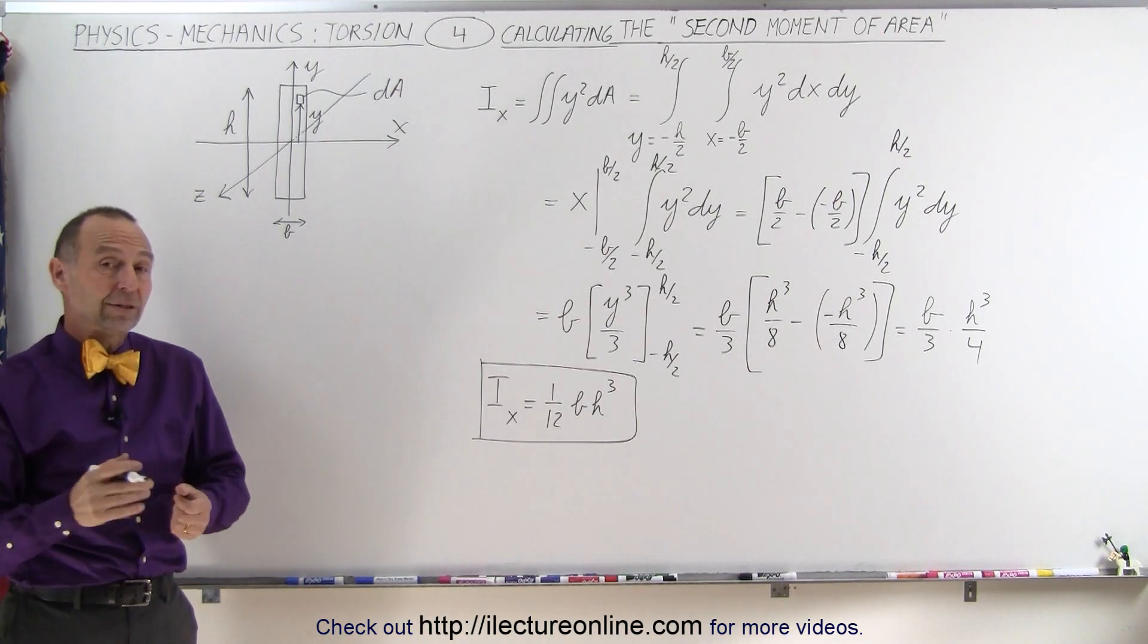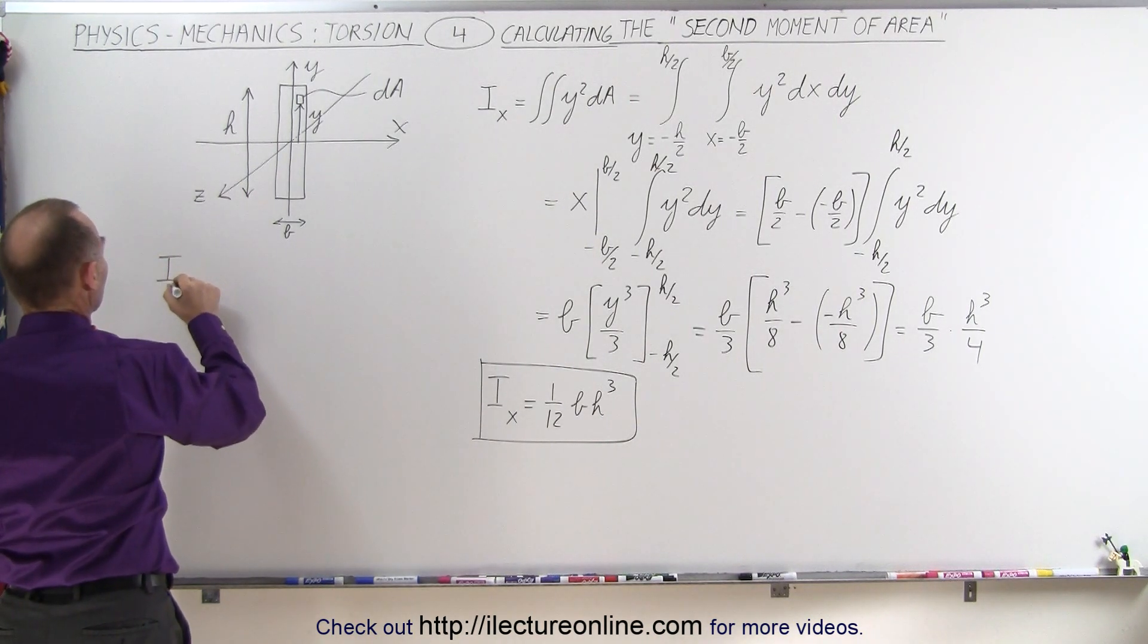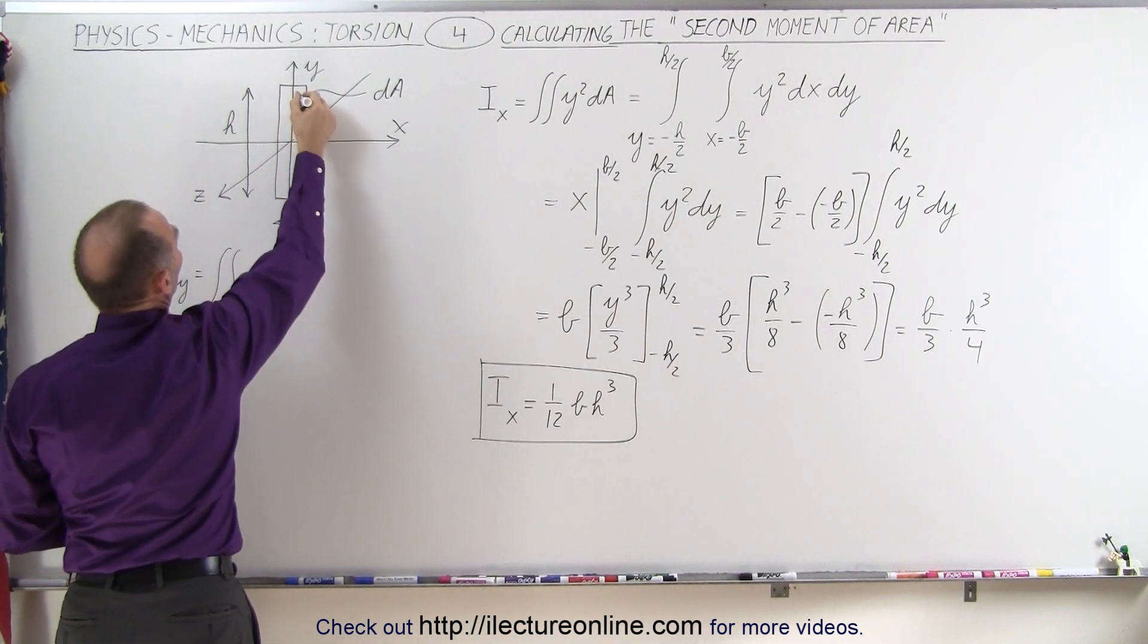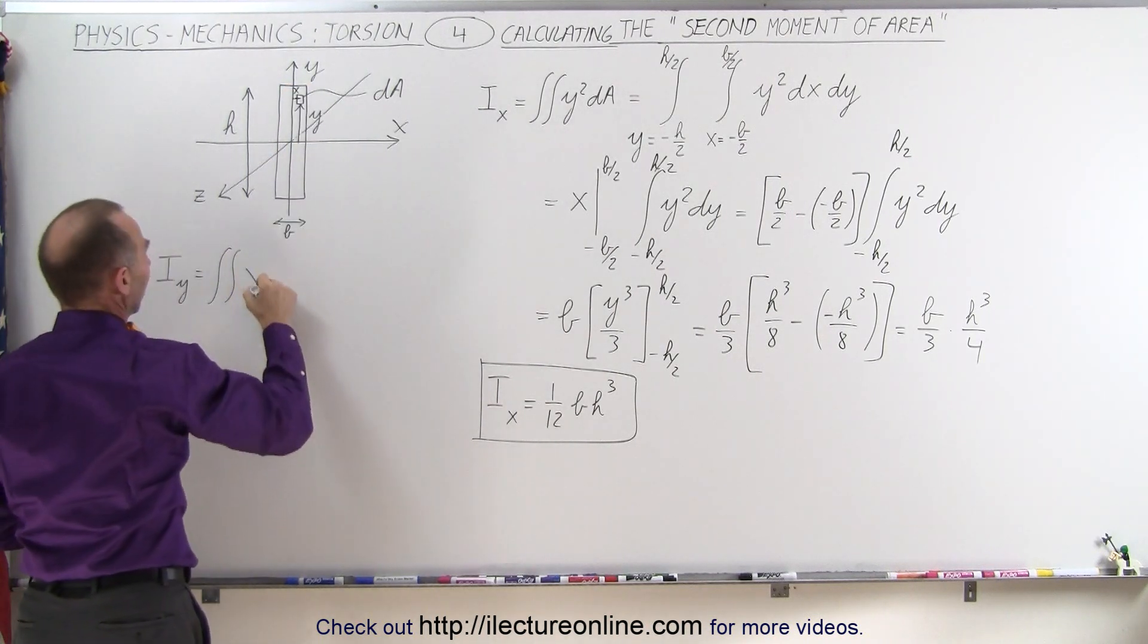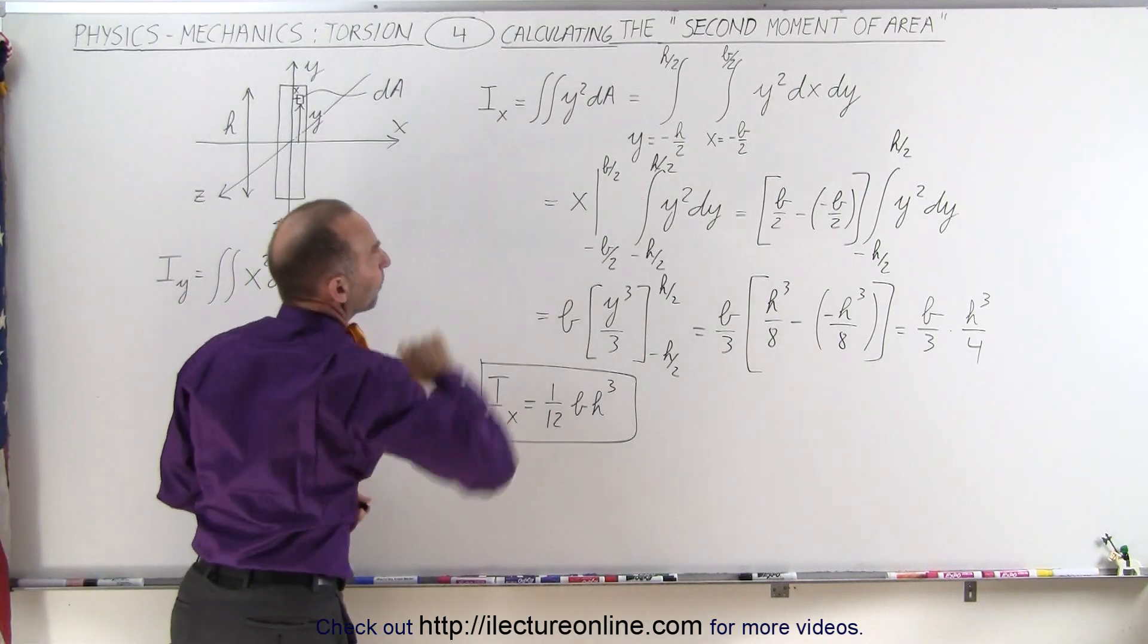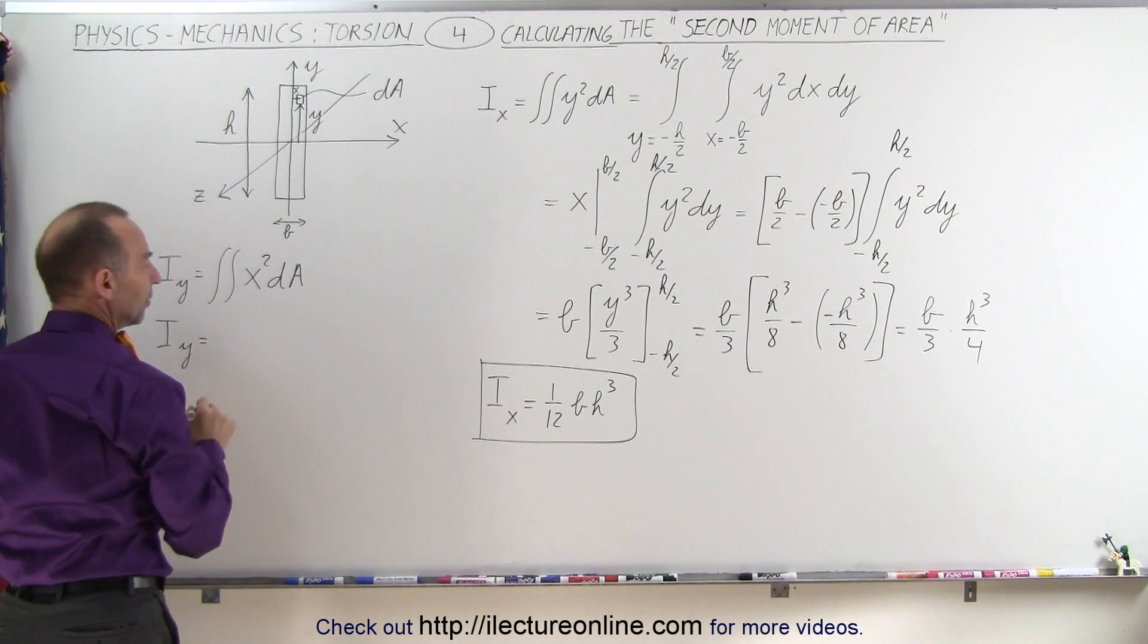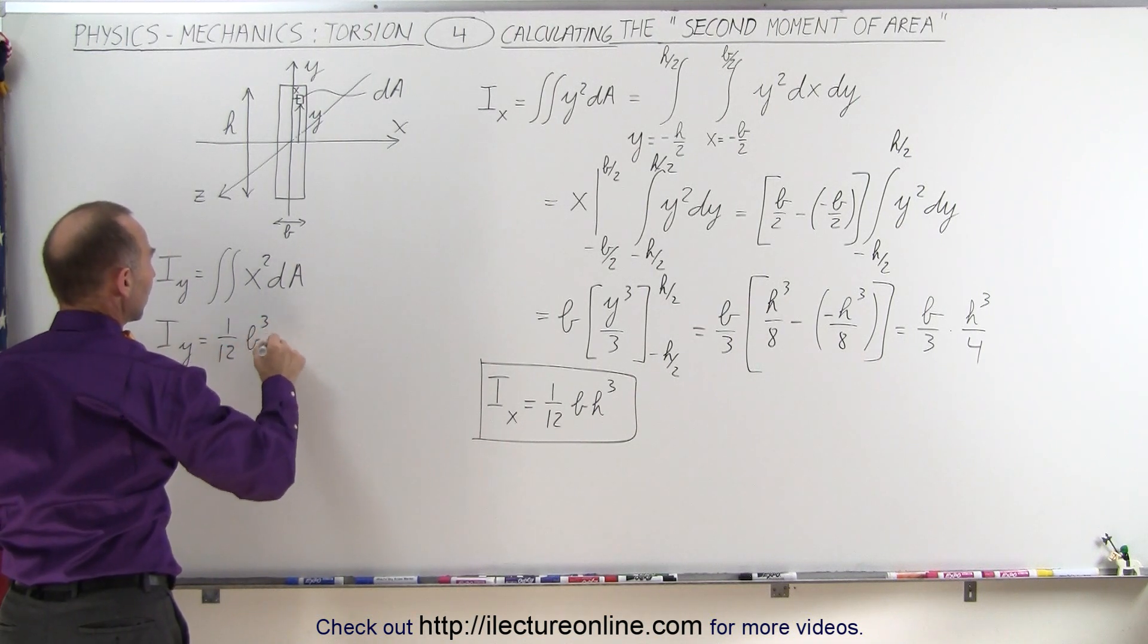Now we can do the same relative to the y-axis. So relative to the y-axis, we get I, relative to the y-axis, is equal to the double integral, but now, of course, we have to do relative to the y-axis, so now we have to consider the x-distance. So we have x-squared times dA. The limits will be the same as before, but now what you'll see is that the result, when we work through that, we get I_y is equal to 1 twelfth b-cubed times h.